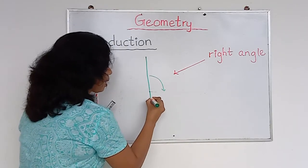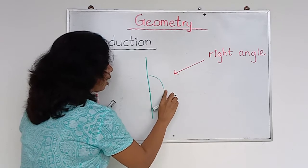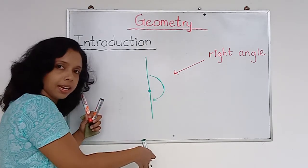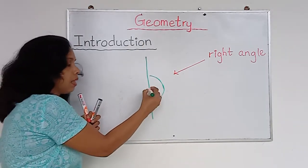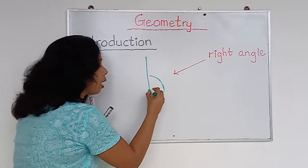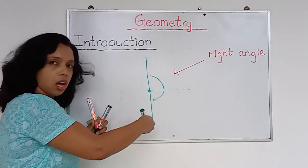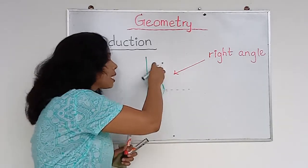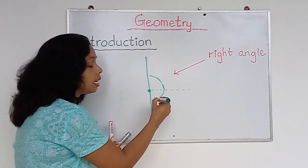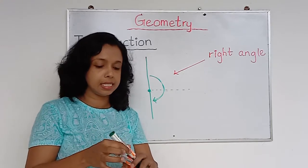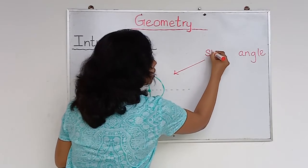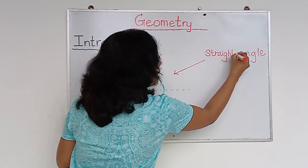Now look at this second one. This arm has come up to this level. There are two arms; they have met here at this point. The space between these two arms — it is half, right? Quarter plus another quarter altogether — half. This type of angle we name as a straight angle. It is two right angles.